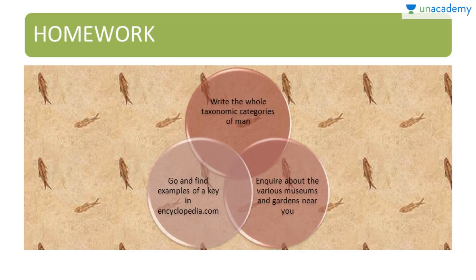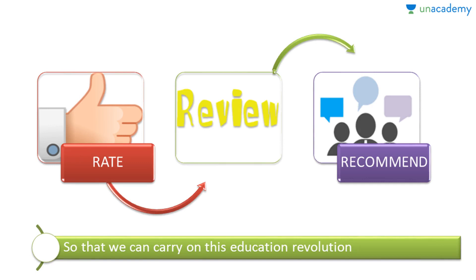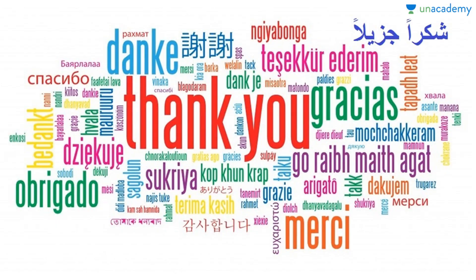Today's homework: write the whole taxonomic categories of man — that is, the species, genus, family, etc. of humans. Enquire about the various museums and gardens near you and visit if you can. Find examples of a key on encyclopedia.com, where it is explained clearly how a key works. Please understand the definitions rather than rote memorizing them. Please rate, review, and recommend my courses on Unacademy. Thank you all.